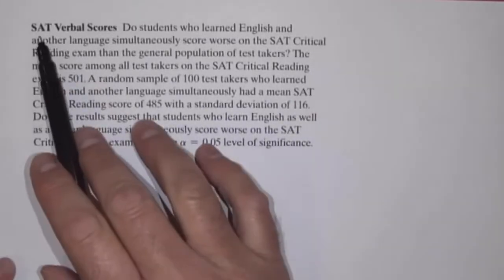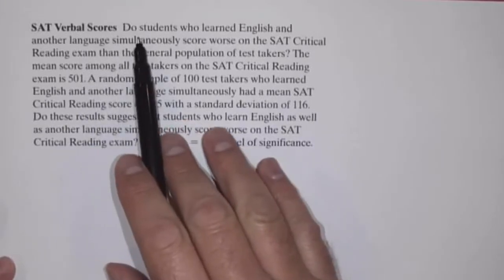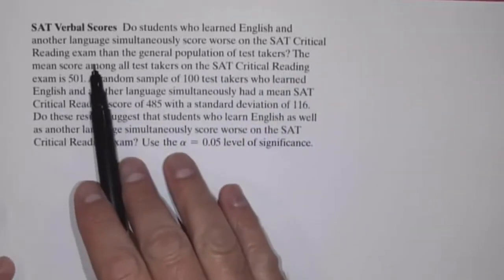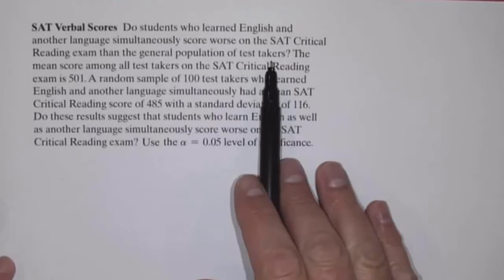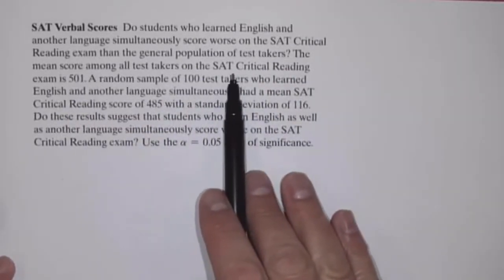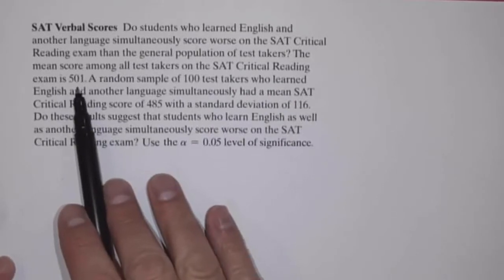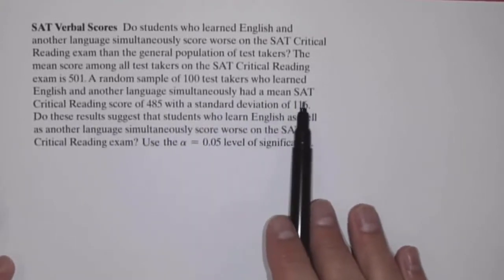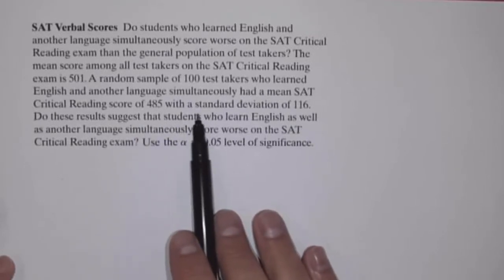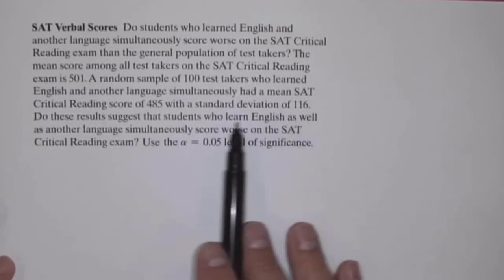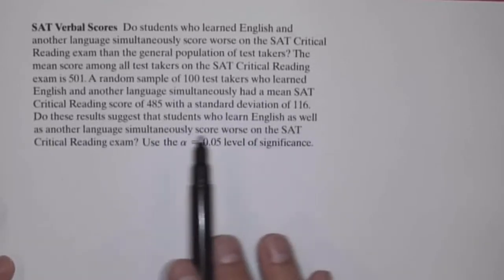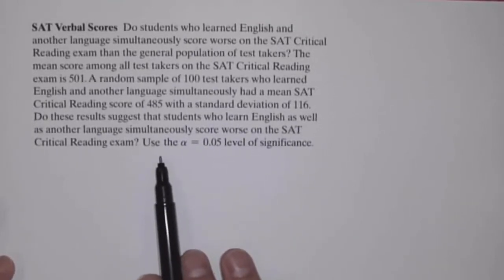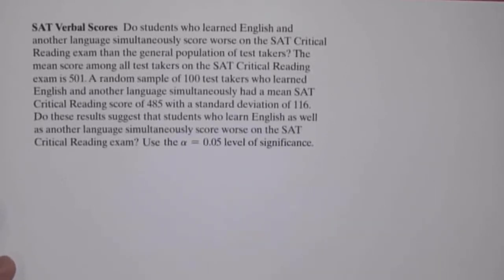In this video, we're going to take a look at an example: SAT Verbal Scores. Do students who learned English and another language simultaneously score worse on the SAT Critical Reading Exam than the general population of test takers? The mean score among all test takers on the SAT Critical Reading Exam is 501. A random sample of 100 test takers who learned English and another language simultaneously had a mean SAT Critical Reading Score of 485 with a standard deviation of 116. Do these results suggest that students who learn English as well as another language simultaneously score worse on the SAT Critical Reading Exam? Use the alpha equals 0.05 level of significance.